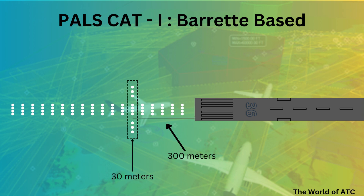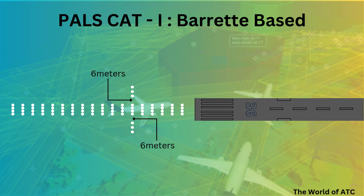The length of the crossbar would be 30 meters. You can calculate the distance between the lights of the crossbar, since the distance between the Barrett and the lights of the crossbar would be maximum 6 meters and the total length of the crossbar is 30 meters. So the crossbar on each side would have a length of 10.5 meters.